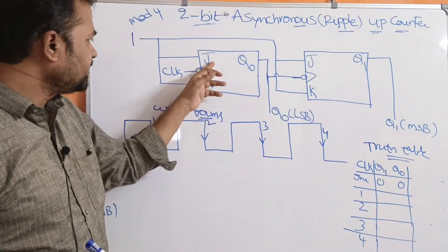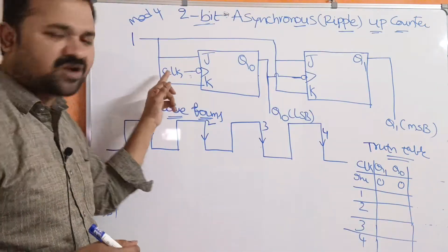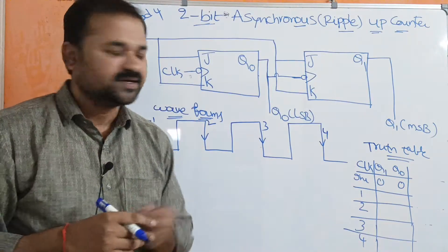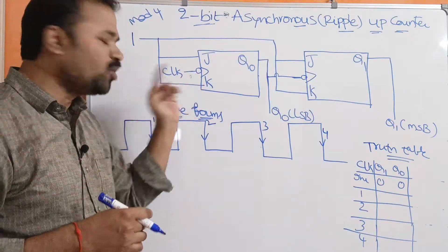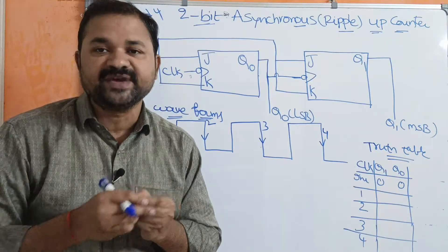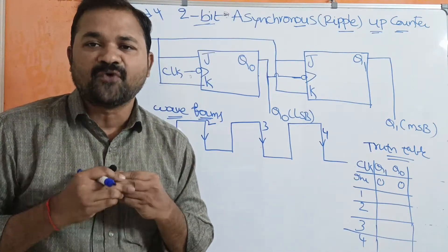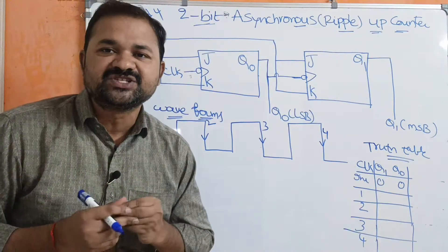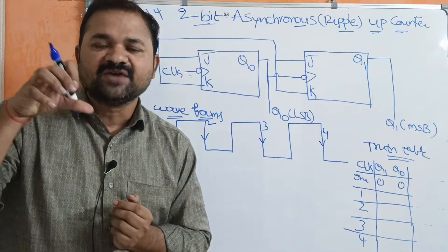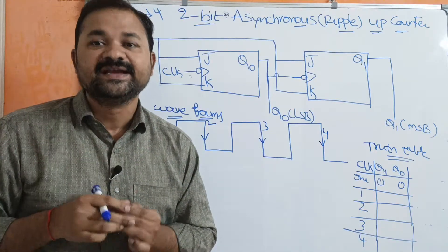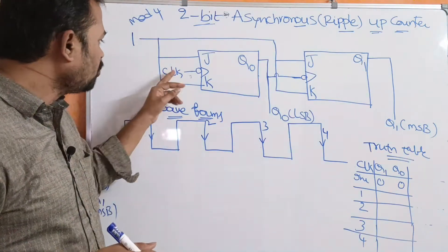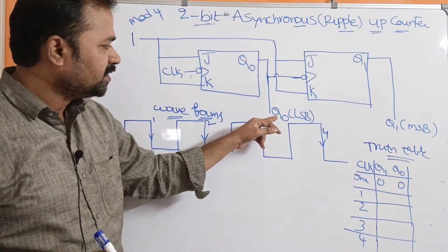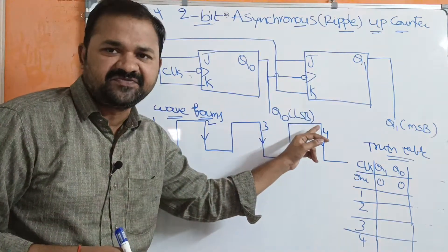The inputs are J and K, and here we have a clock pulse with a small circle (bubble), which represents it is a negative edge or falling edge. The triggering will happen at the negative edge of the clock pulse, meaning the flip-flop will work at the negative edge. The output of the first flip-flop is Q0, which acts as the least significant bit.